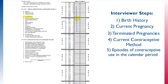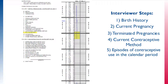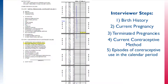The interviewer then asks the respondent if she used a method between the terminated pregnancy in November 2010 and the beginning of the pregnancy in February 2014. The respondent indicates that she used periodic abstinence, also known as the rhythm method, starting in September 2013, up until she became pregnant with Sarah. The reason for discontinuation, then, is that she became pregnant. The interviewer then asks the respondent if she used a method between the terminated pregnancy in November 2010 and starting use of periodic abstinence in September 2013.